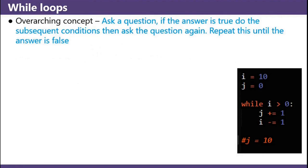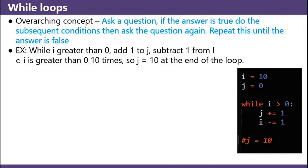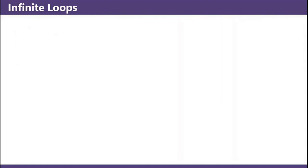While loops. Overarching concept: ask a question. If the answer is true, do the subsequent statements, then ask the question again. Repeat this until the answer is false. Example: while i is greater than zero, add one to j, subtract one from i. i is greater than zero ten times, so j equals 10 at the end of the loop.